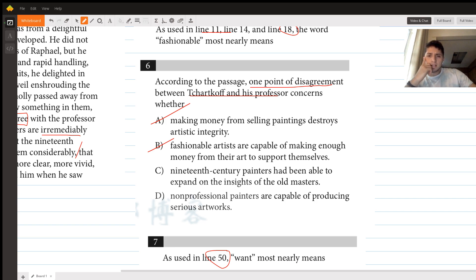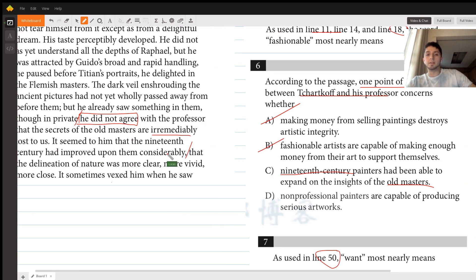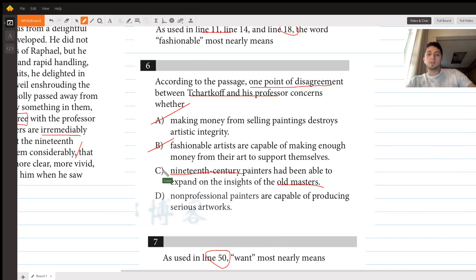C says 19th century painters have been able to expand on the insights of the old masters. This pretty much talks exactly what our text was about, which is 19th century paintings improving on the insights of the old masters. That's what it says here: it seemed to him that the 19th century had improved upon them considerably. So this is a good option, probably our answer.